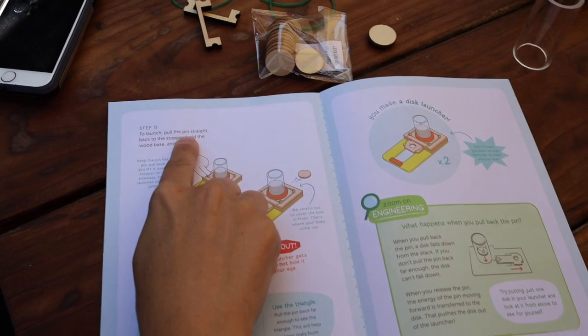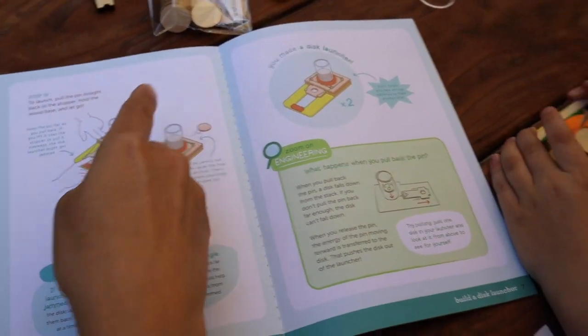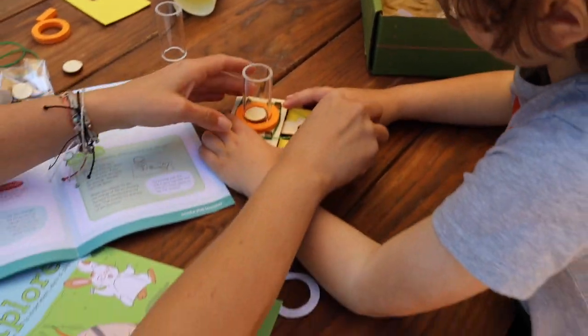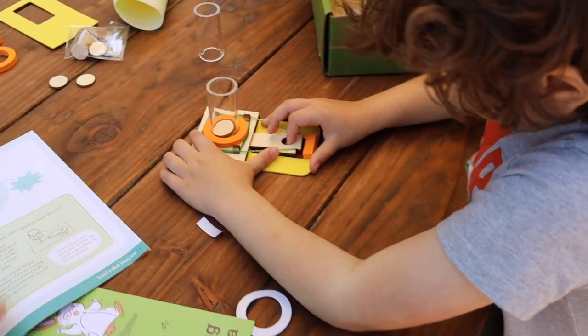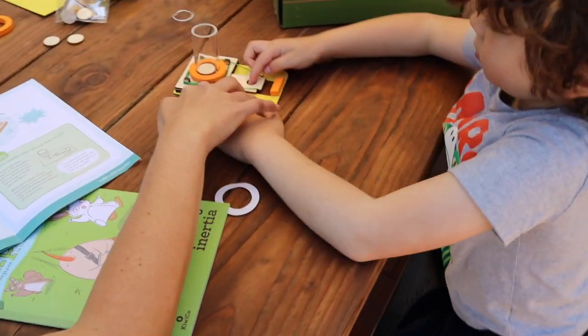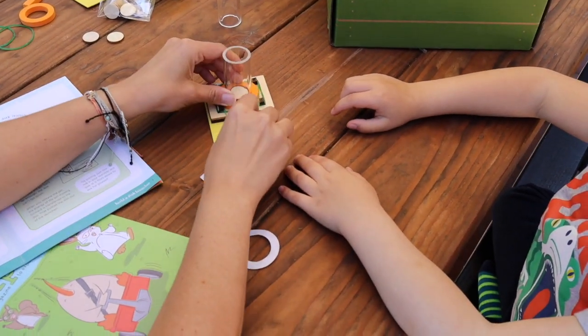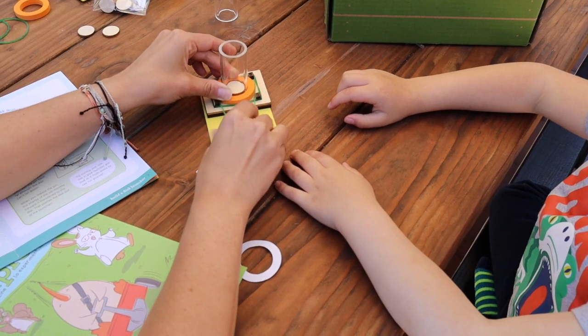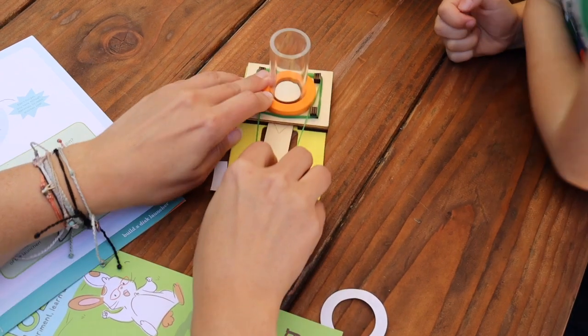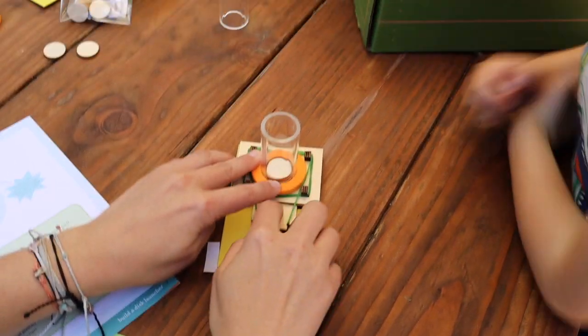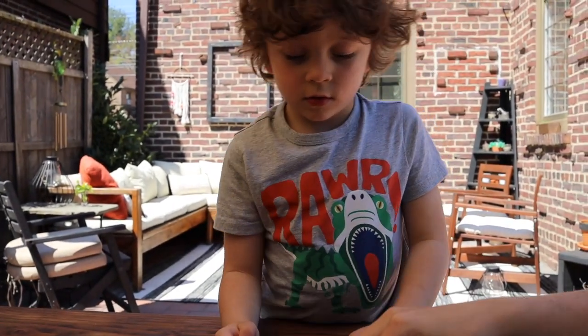To launch, pull the pin straight back to the stopper. Hold the wood base and let go. So you have to wait. Hold the wood base and let go. Wait. Hold the wood and hold this part. Ready? Go. Pull it there. Now let go. Something went wrong. Let's see. You pull it back, let go. You go. That. You need more, Mommy?